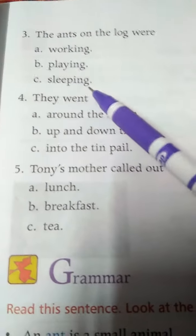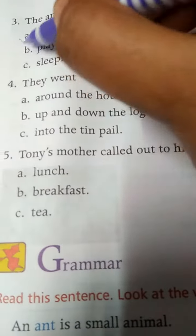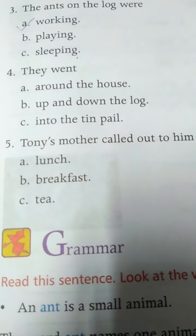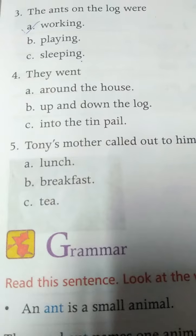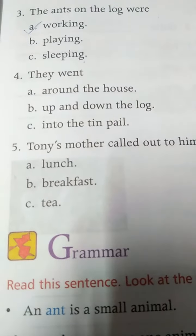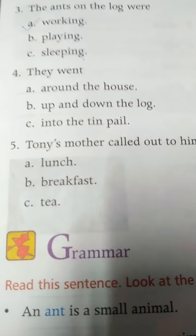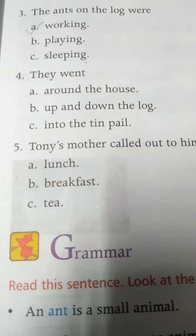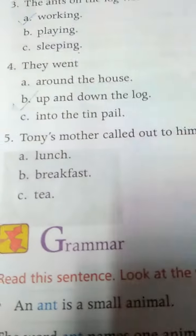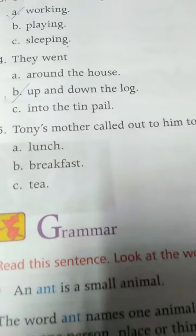What were they doing? They were working. They went around the house, up and down the log, into the tin pail. Where did they go? Up and down the log — B is the correct answer.